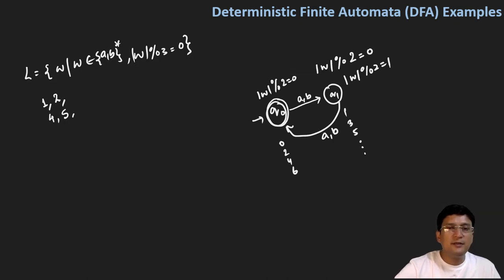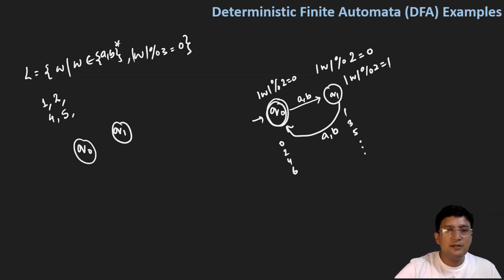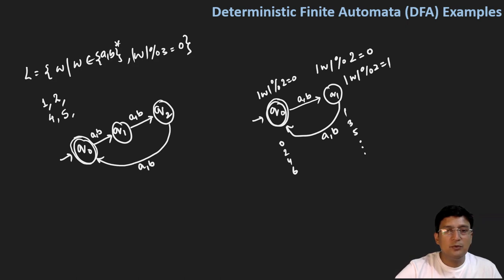Here it says the length of a string mod three equals zero. Using the same idea as mod two, I can make three states: q0, q1, and q2. I keep q0 as the final state because the zero-length string should also be accepted. On getting A or B from q0, move to q1. On getting A or B from q1, move to q2. On getting A or B from q2, move back to q0. So strings of length zero, three, and six are accepted by state q0.